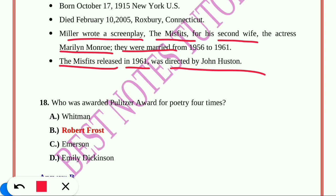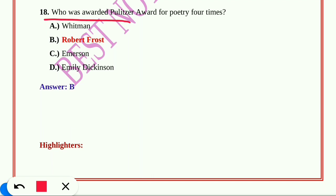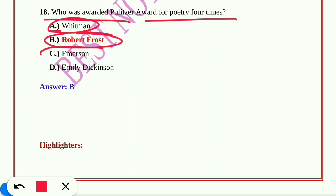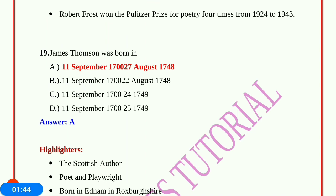Question number eighteen: Who was awarded the Pulitzer Prize for poetry four times? A) Walt Whitman, B) Robert Frost, C) Emerson, D) Emily Dickinson. The answer is option B, Robert Frost. Robert Frost won the Pulitzer Prize for poetry four times, from 1924 to 1943.